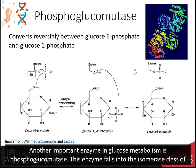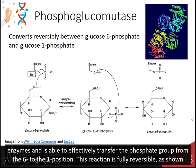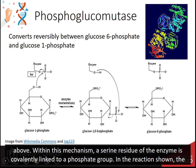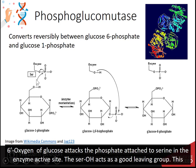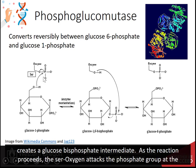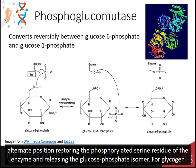Another important enzyme in glucose metabolism is phosphoglucomutase. This enzyme falls into the isomerase class of enzymes and is able to effectively transfer the phosphate group from the 6th position to the 1 position. This reaction is fully reversible. Within this mechanism, a serine residue of the enzyme is covalently linked to a phosphate group. The 6' oxygen of glucose attacks the phosphate attached to the serine in the enzyme active site. The serine hydroxyl acts as a good leaving group, creating a glucose-bisphosphate intermediate. As the reaction proceeds, the serine oxygen attacks the phosphate group at the other position, restoring the phosphorylated serine residue of the enzyme and releasing the glucose-phosphate isomer.